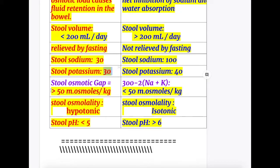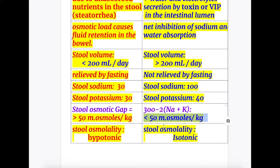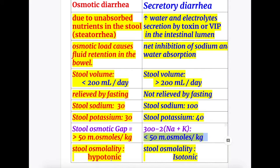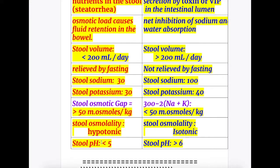Using the secretory diarrhea figures — sodium 100 and potassium 40 — we get: 300 minus 2×(100+40) = 300 minus 280 = 20, which is less than 50 milliosmol per kg. The stool osmolality is hypotonic in osmotic diarrhea and isotonic in secretory diarrhea. Stool pH is less than 5 in osmotic diarrhea and more than 6 (more alkaline) in secretory diarrhea.